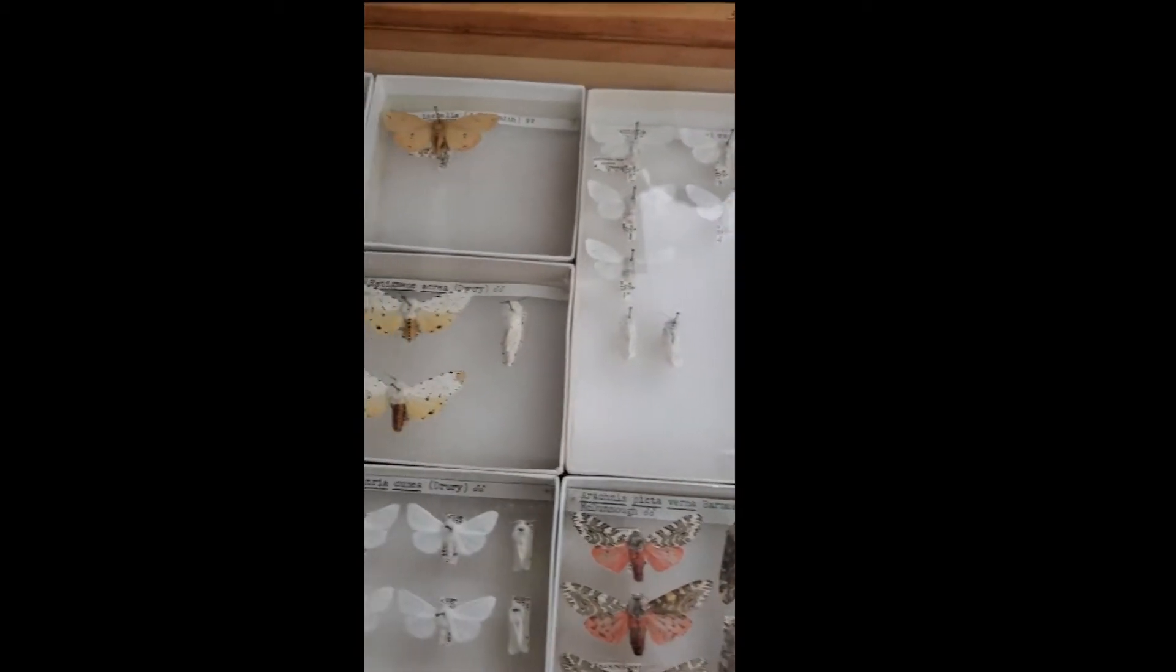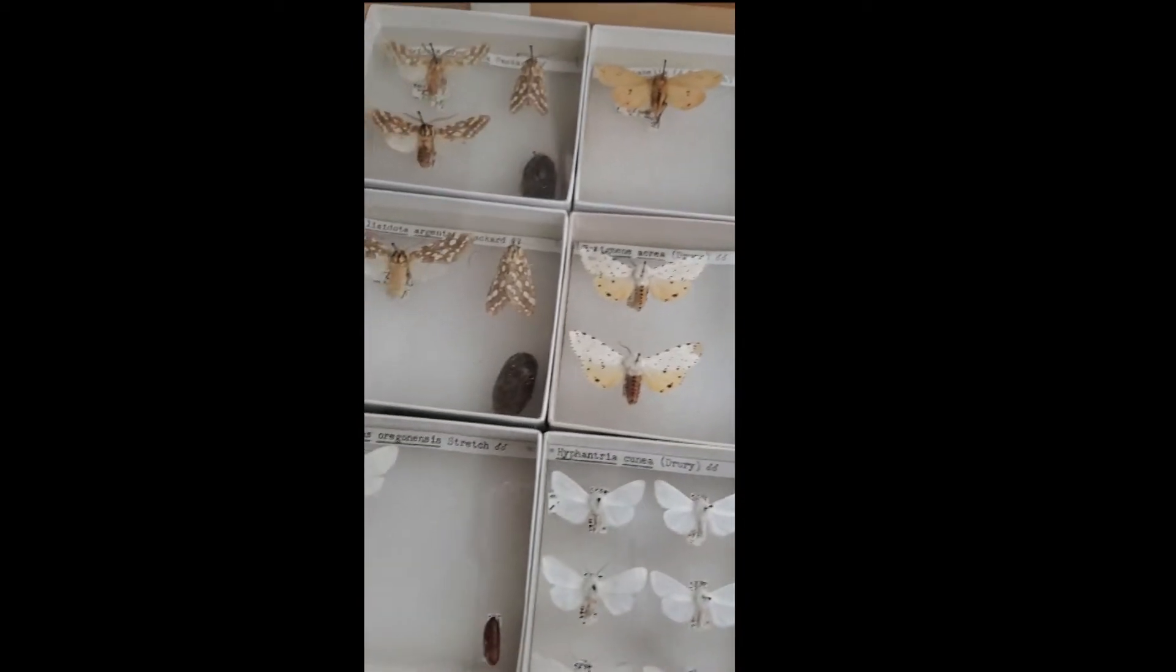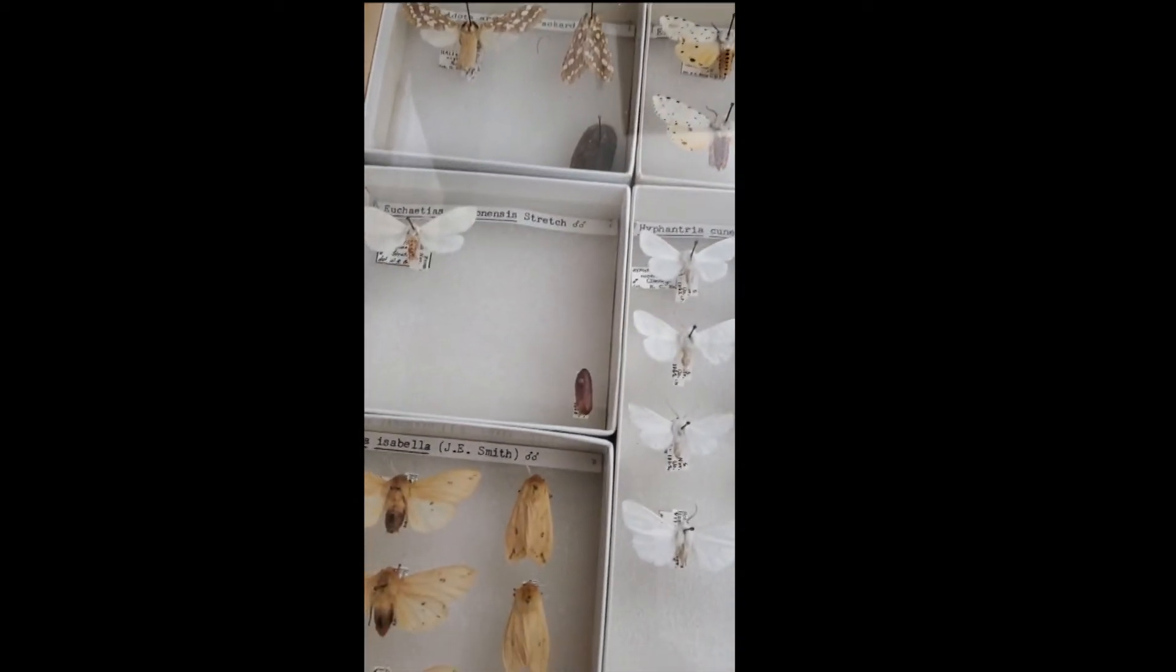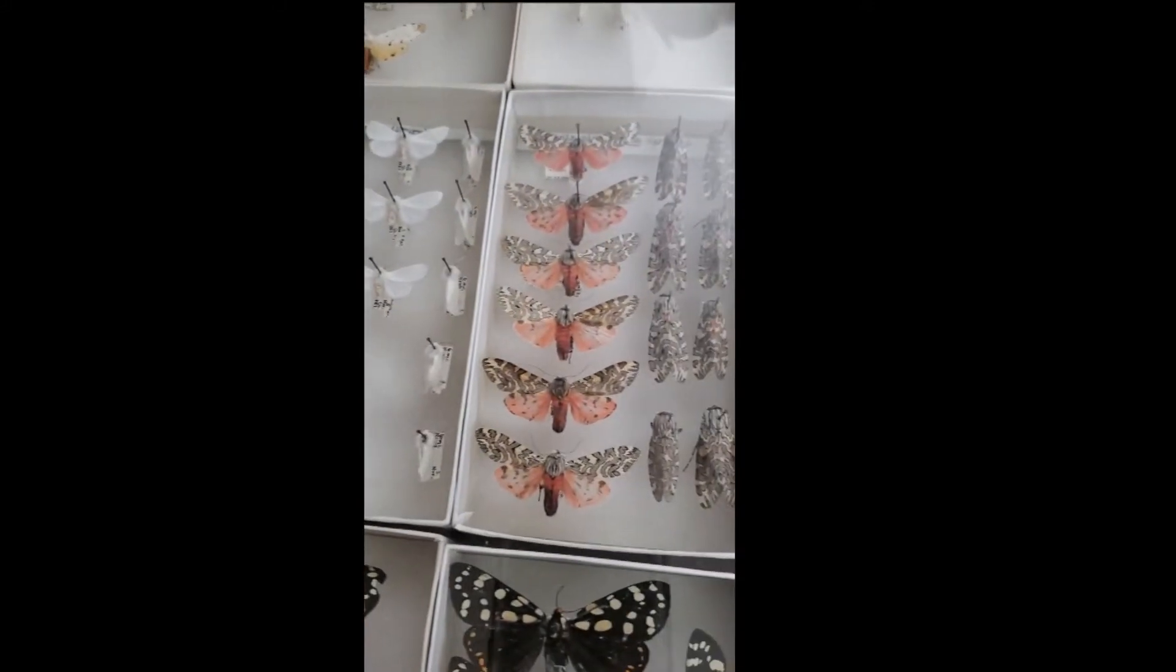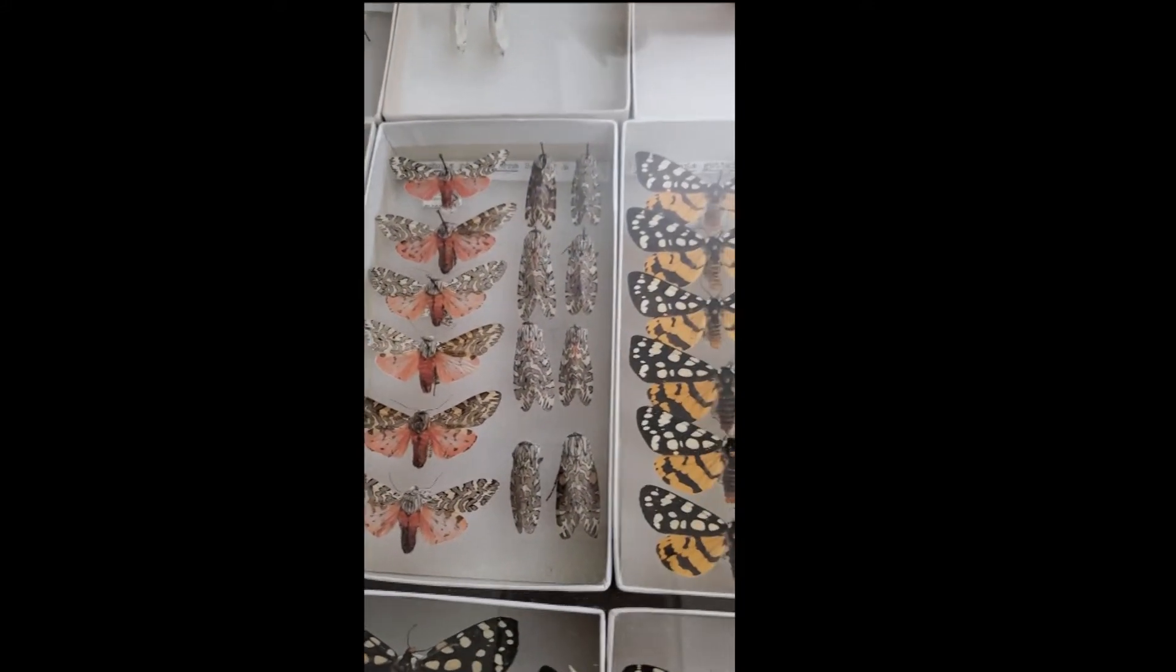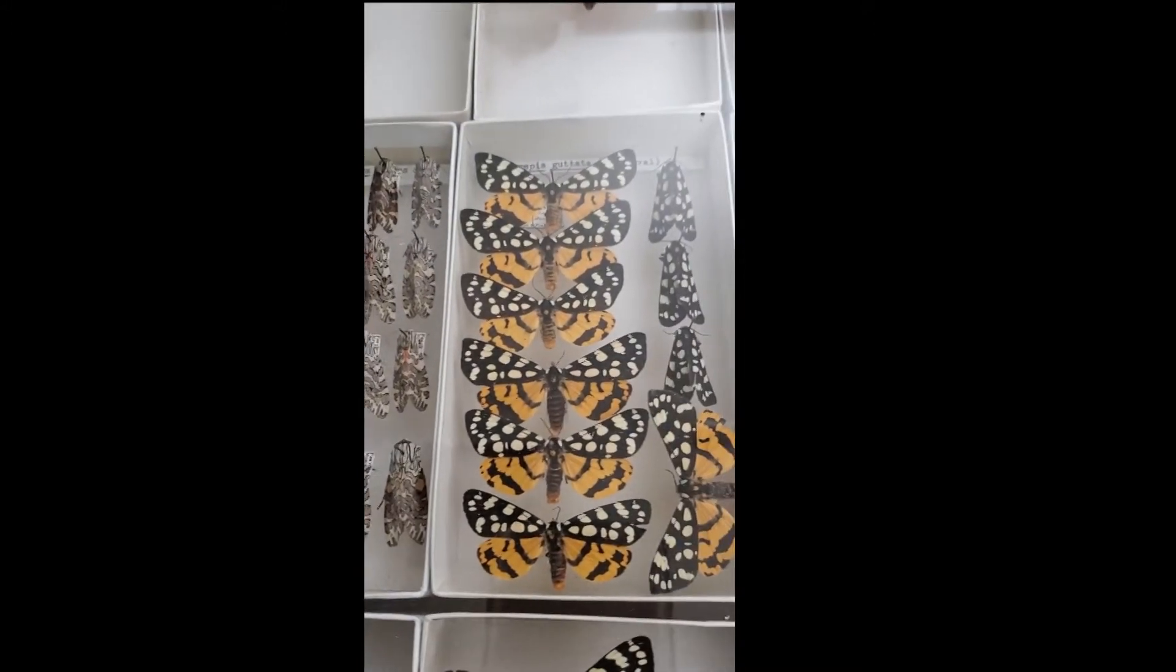We also have some butterflies and moths. These are tiger moths or ones that come from woolly bear caterpillars. And they, again, come from all over the state. You notice on these, on the butterflies and moths, we mount them with their wings spread.